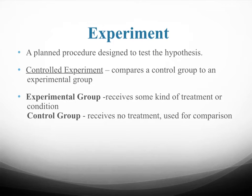An experiment is a planned procedure designed to test your hypothesis. Typically you want a controlled experiment with a control group and an experimental group. A classic example is a drug trial: you give a blood pressure drug to one group, and a sugar pill — a placebo — to another group. If the drug group's blood pressure goes down but the placebo group's doesn't, that suggests the drug really has the desired effect. That's what a control group is: something we can test to see whether what we're studying is truly having an effect.